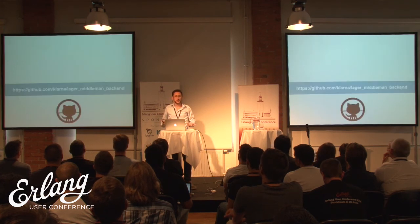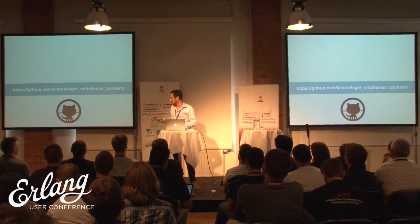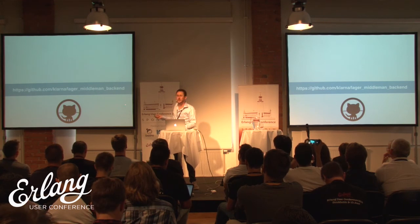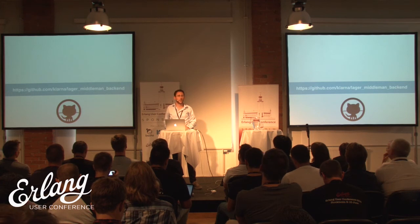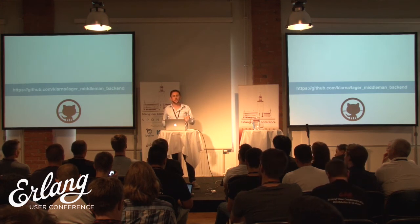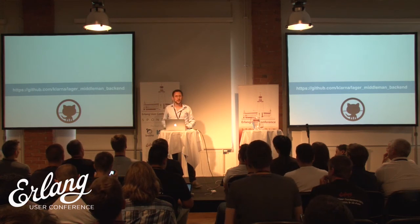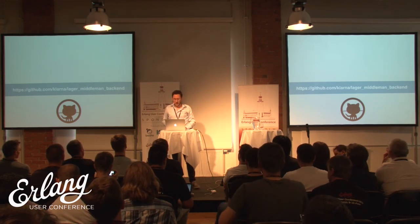This is a very trivial piece of code, but we released it as open source under the Klarna account as the Lager middleman backend — around 20 to 30 lines of code. You take your Lager configuration, wherever you have your file backend, wrap it into this middleman, and it does the spawning for you. So you take the original backend tuple as an argument and wrap it with lager_middleman_backend.